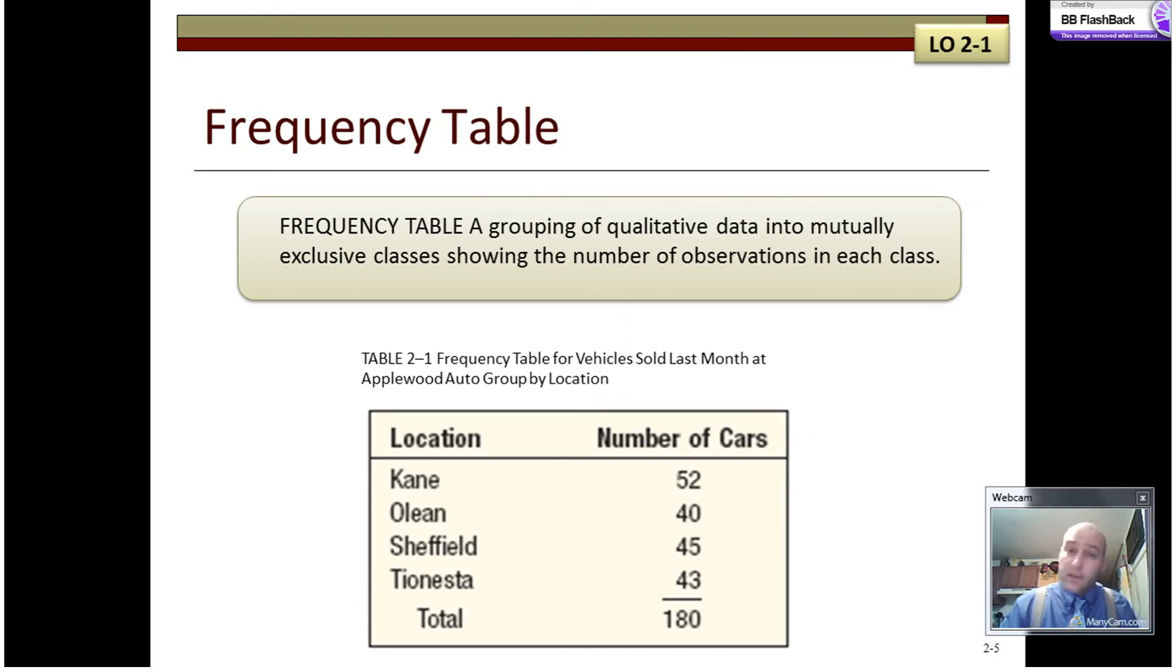To start, we'll talk about a frequency table. It's a grouping of qualitative data into mutually exclusive classes showing the number of observations in each class. Mutually exclusive means that there's no overlap. If a car got sold at the Kane dealership, for example, it could not also have been sold at the Olean dealership. It can only be sold at one. That makes it mutually exclusive. Like I said, there's 180 records, and we can see here the number of cars that were sold at each location. Strictly speaking, a frequency table is qualitative data. Here, we're simply counting how many cars left each of these lots.